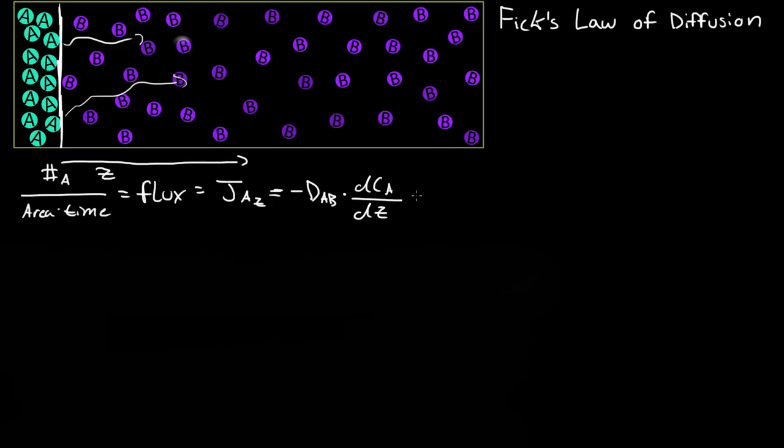So then another way of writing that is the negative diffusion coefficient of A into B, times delta C over delta Z, where delta Z is just equal to, let's say if we start right there, this would be Z1, and this would be maybe Z2, so Z2 minus Z1.